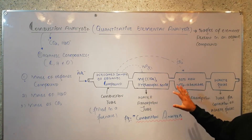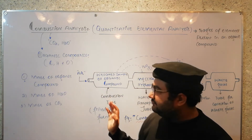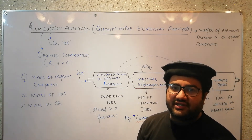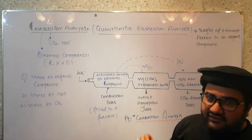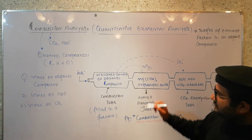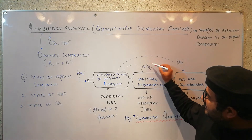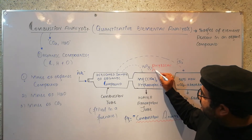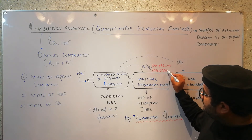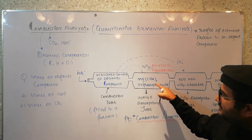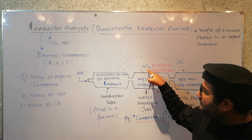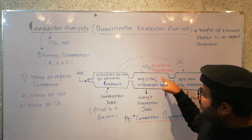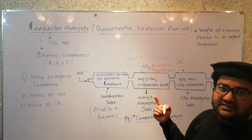Now the practical portion of the combustion analysis is over. We will apply some formulas to calculate the percentages of carbon, hydrogen, and oxygen. The absorption of water vapors into the magnesium perchlorate is an example of physical absorption, because magnesium perchlorate has captured the water molecules and now the water molecules are attached to magnesium perchlorate in the form of water of crystallization — there is no chemical change in this solid.